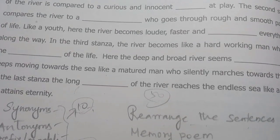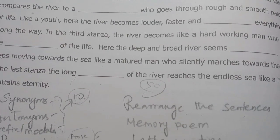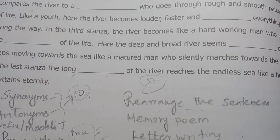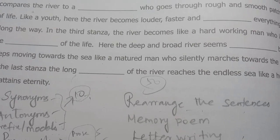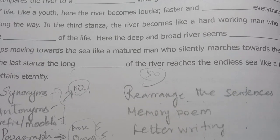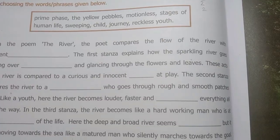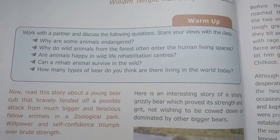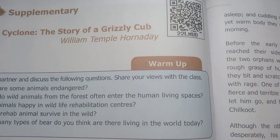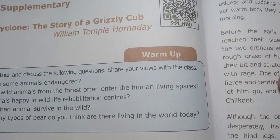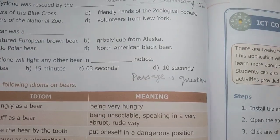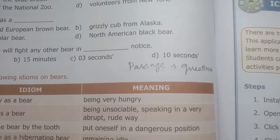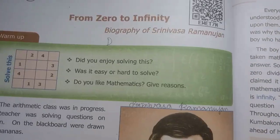We will discuss the previous year 2022. Unit 5 Supplementary: Little Cyclone — the story of a Grizzly Cub. Jumble sentences are there, so you will see that.